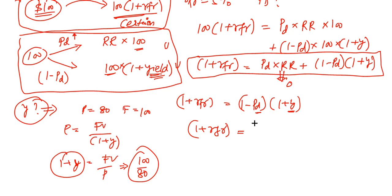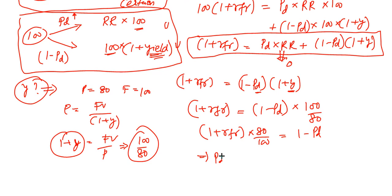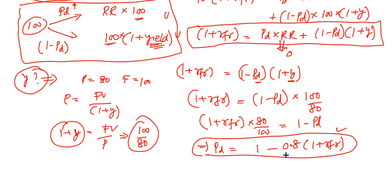So what we have is 1 plus RFR will be equal to 1 minus probability of default into 100 by 80. Now we can bring this over here. So it will be 1 plus RFR into 80 by 100 will be equal to 1 minus PD. As a result your PD would be equal to 1 minus 0.8 that is 80 by 100 into 1 plus RFR. So this would be the answer of your problem. So PD will be equal to this.